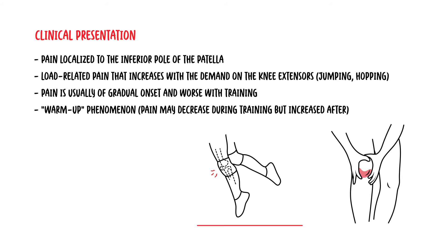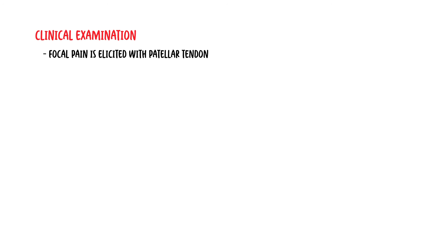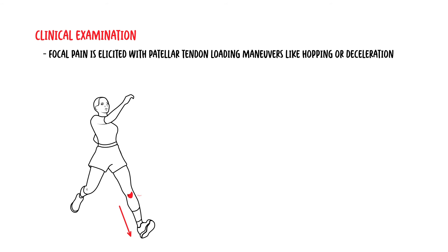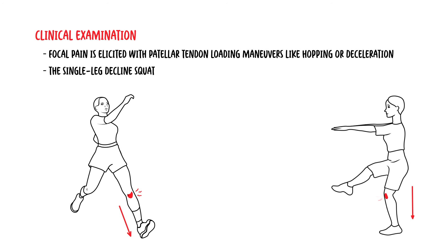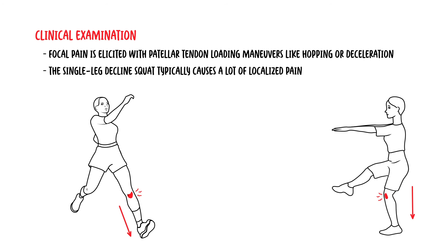Without adequate time to recover, patella tendinitis or tendinopathy can become chronic. Clinical examination often reveals focal pain in the patella tendon that is worse with loading maneuvers like hopping or deceleration. The single leg decline squat typically causes a lot of pain localized in this region during early knee flexion.